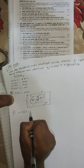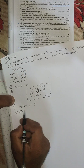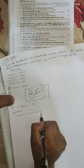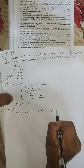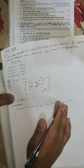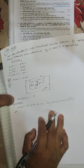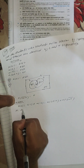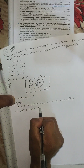n(L ∪ T) complement is equal to — we use the formula: n(L) plus n(T) minus n(L ∩ T) plus n(L ∪ T) complement. So the U value is 250, n(L) is 130, and n(T) is 150.